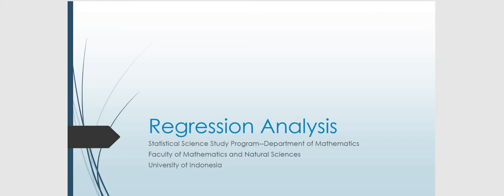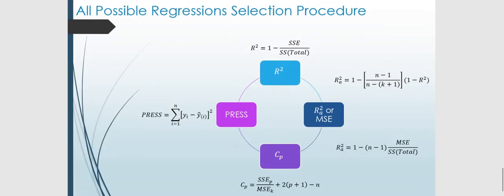Hi everyone, welcome to the regression analysis lecture. For this session we will still be discussing the criterion for model selection. Previously we learned about the R-squared criterion and the adjusted R-squared criterion. For this session we will be discussing the CP criterion given by this formula and how we are going to use this criterion in selecting our model.